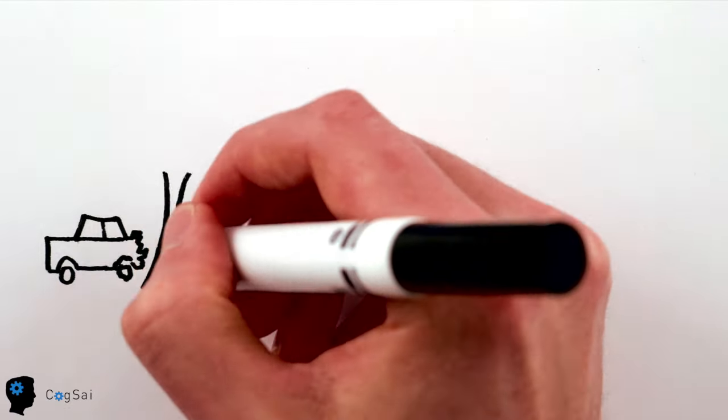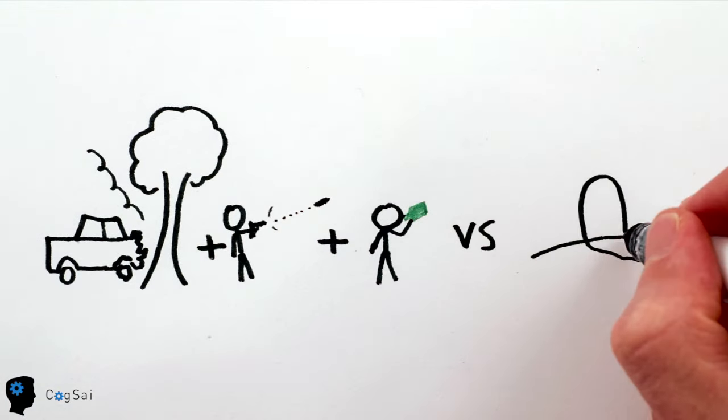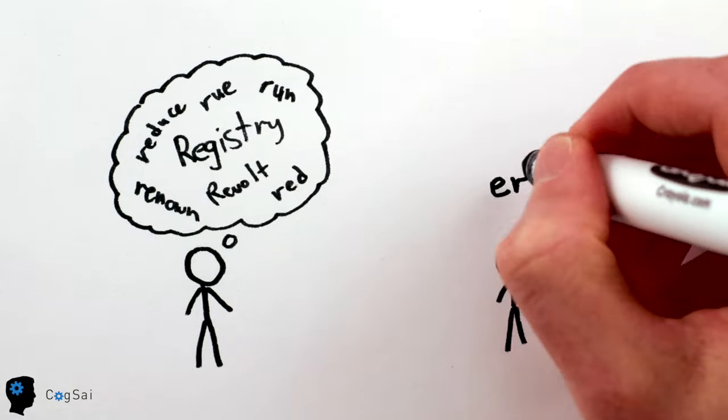Which kills more people each year? Car accidents, homicide, and suicide combined? Or cancer? And are there more English words that start with the letter R? Or do they have R as a third letter?